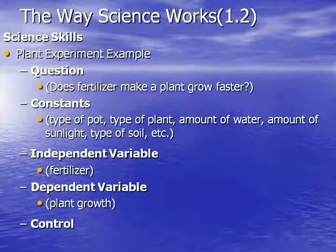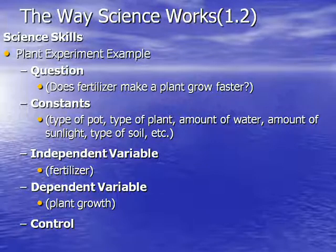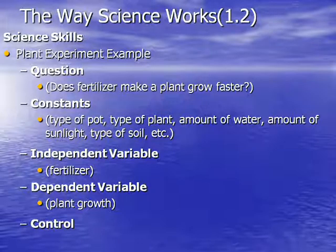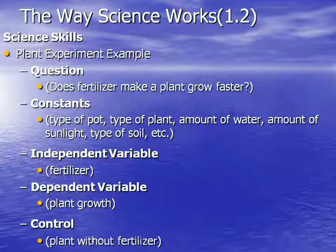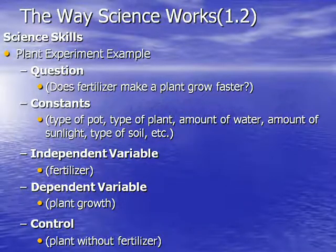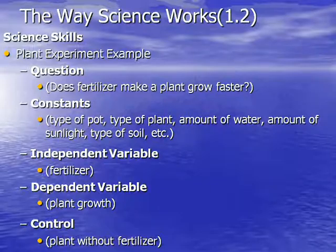The control group is always the most normal setup in the experiment — the one that never changes. In our plant experiment, the control group is the plant without fertilizer, because we use it to compare the results to the plant with fertilizer.